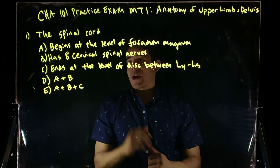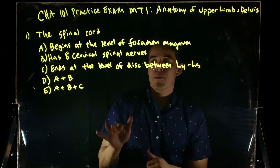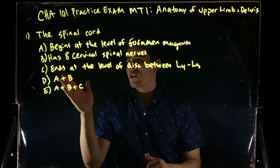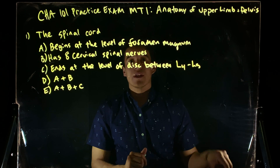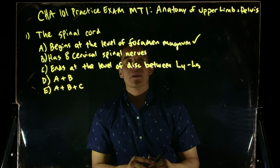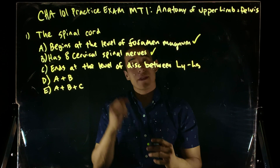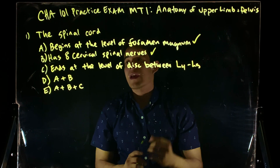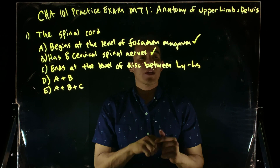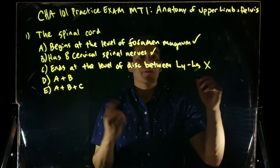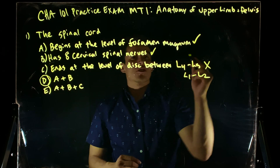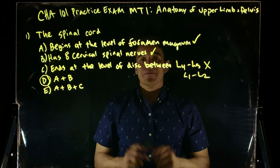Let's jump into it. The spinal cord — pause it, give the choices a try, then come back. The spinal cord begins at the level of the foramen magnum — that's correct. It has eight cervical spinal nerves — that's right. We have seven cervical vertebrae but eight cervical spinal nerves. And it ends at the level of the disc between L1 and L2, not L4 and L5. So our answer choice is D — just A and B.